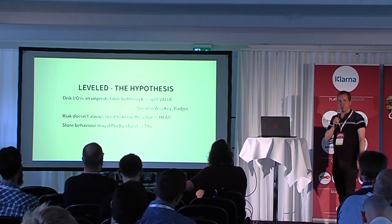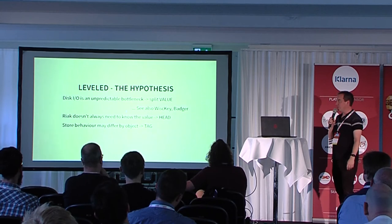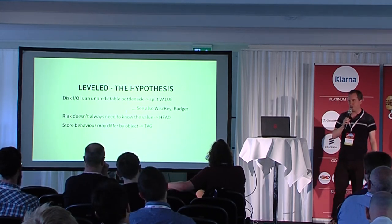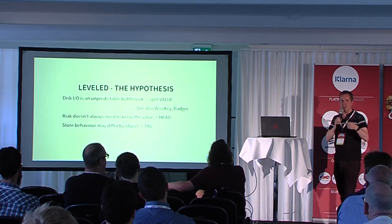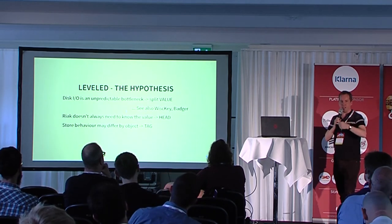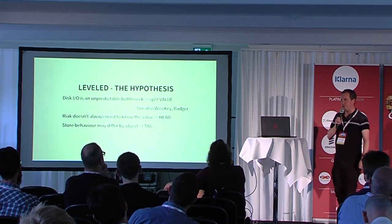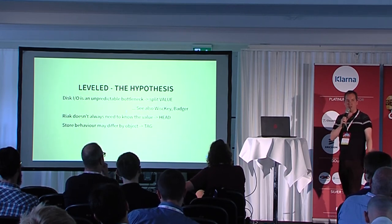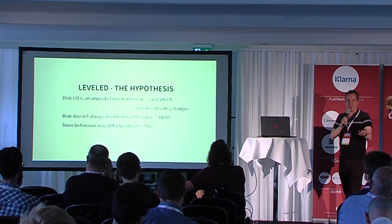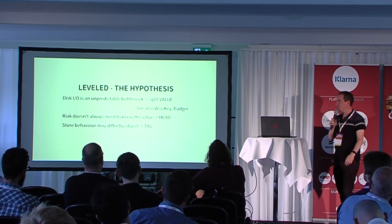Other people have been thinking about this as well. There are a couple of alternative log-structured merge trees: WiscKey from the University of Wisconsin, and Badger, a key-value store written in Go by the DGraph people. They've both followed the same principle: write amplification is a problem, so put values to one side and only merge down keys and references to where values are in the merge tree. There's nothing new about that idea — it was actually in the original LSM tree paper. Now increasingly people are looking at that, so we're going to split values out at the start and not put them into the merge tree.